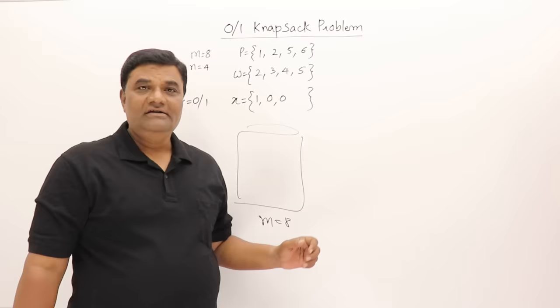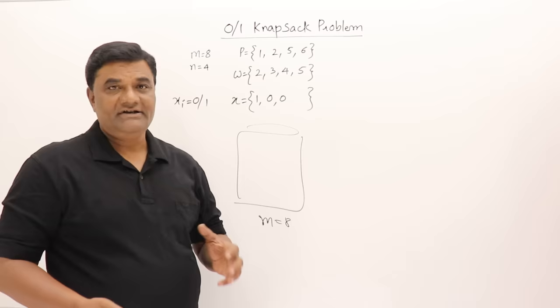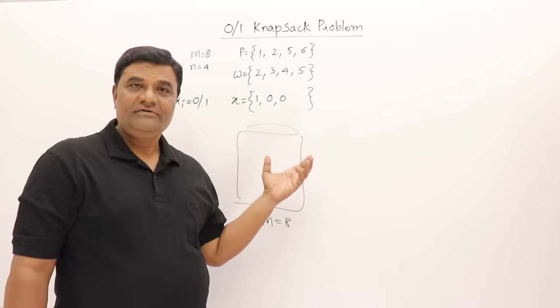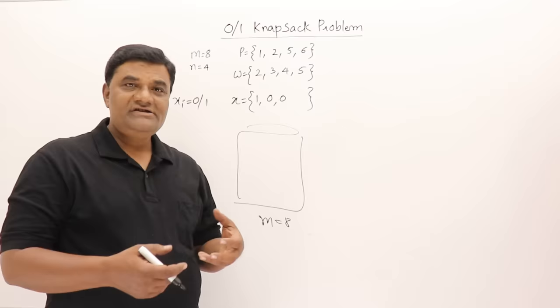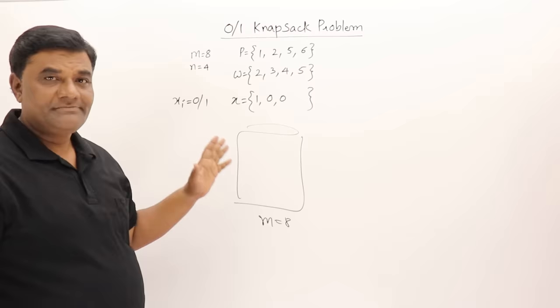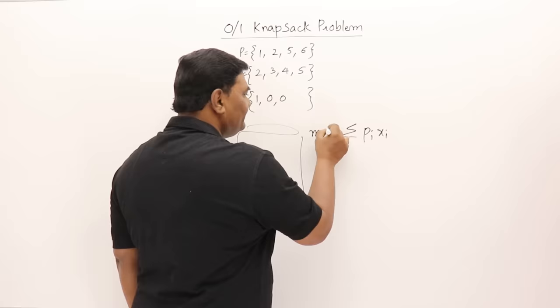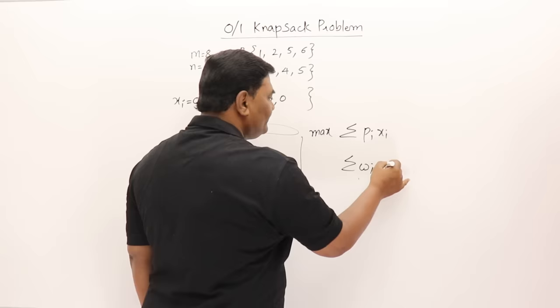These are solid objects — maybe a mixer, microwave oven, or a router — which I cannot take half of. So these are indivisible objects: either I carry the whole object or don't carry it at all. I have to carry objects such that the sum of their profits is maximized and the sum of their weights is less than or equal to the capacity of the bag.